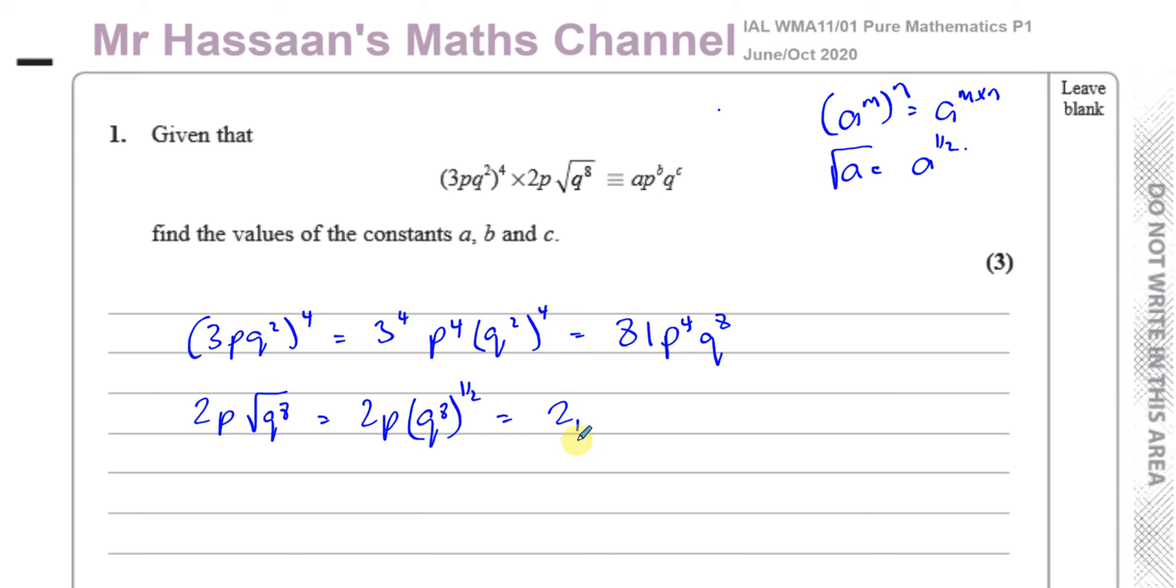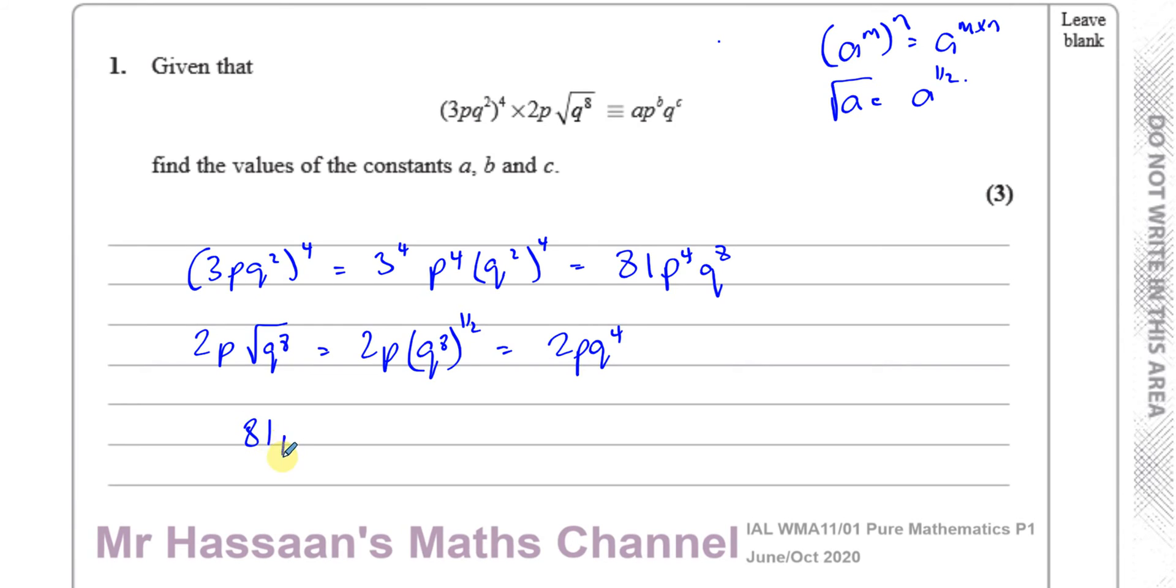And therefore we have to multiply those together so we have 81P⁴Q⁸ multiplied by 2PQ⁴ which will give us 81 times 2 is 162, and P⁴ times P, well you have to add the powers together so this is like P¹ here so you have P to the power of 5. That's from our index law that a^m times a^n equals a^(m+n). As long as the bases are the same you can multiply two numbers in index form and simplify by adding the powers. So P⁴ times P¹, you add the powers 4 and 1 gives you 5. Similarly for Q you add the powers 8 and 4 gives you 12.